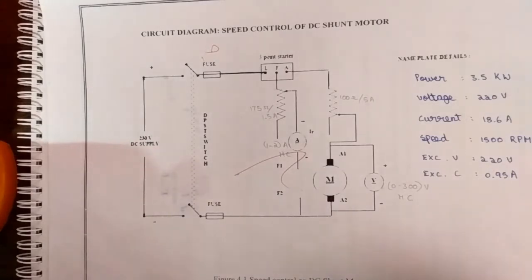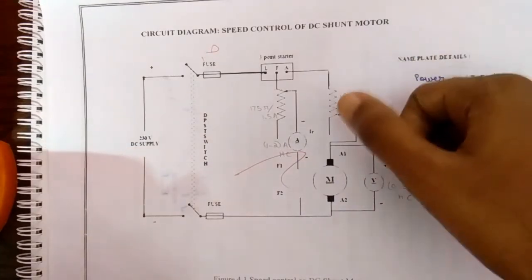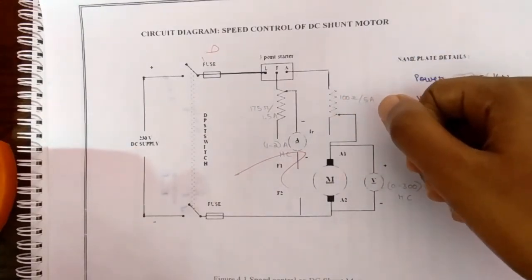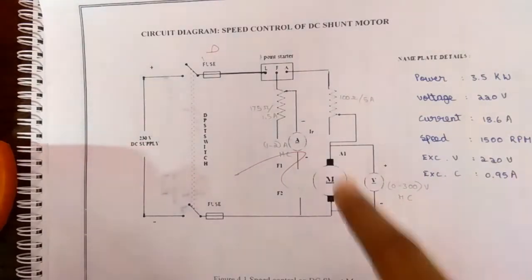The same procedure is repeated for different armature voltages. And finally we should plot a graph between IF and the speed of the motor.